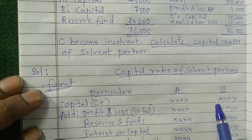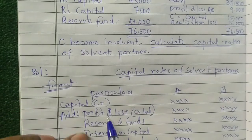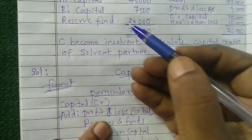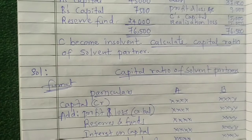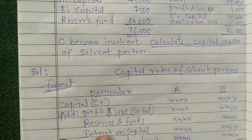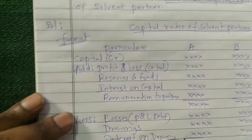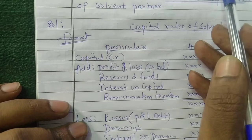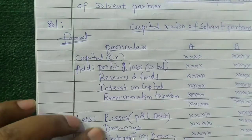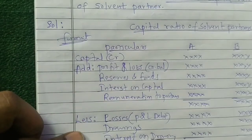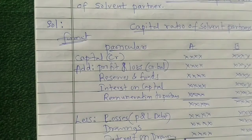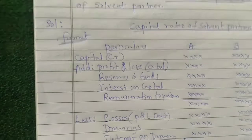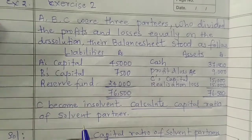To solve the capital ratio of solvent partners: first take capital A and B, add profit and loss credit balance, add reserves and fund, add interest on capital and remuneration to partners if given. Subtract losses from the asset side if given, subtract any drawings and interest on drawings if given, then calculate the final total to determine the capital ratio.